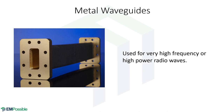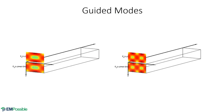Metal waveguides are used for radio and microwave frequencies, especially when frequencies are too high for circuit boards or the power is very high. The metal acts like a mirror, keeping the electromagnetic wave trapped inside traveling down the pipe. The electromagnetic fields inside a waveguide must follow Maxwell's equations, so there are only certain field patterns — called modes or guided modes — that can exist inside.